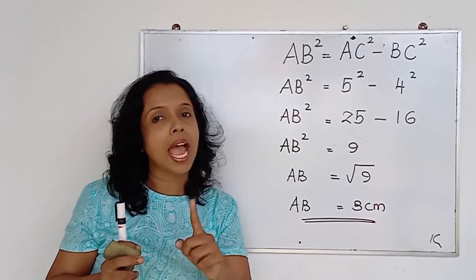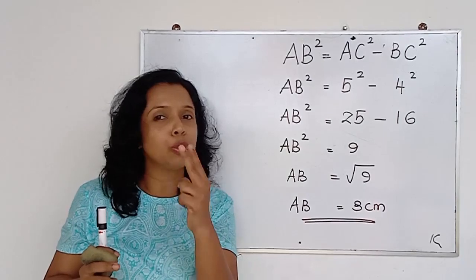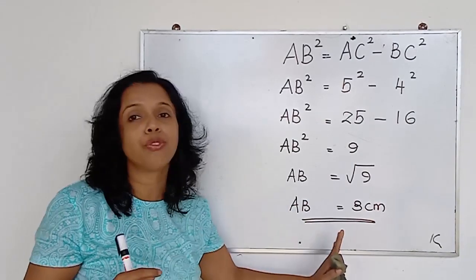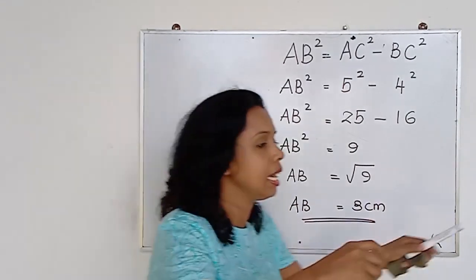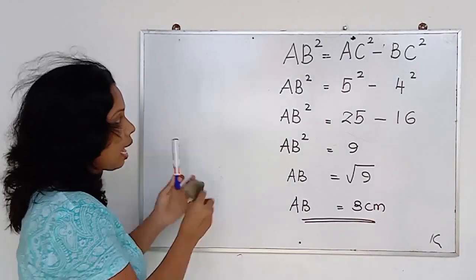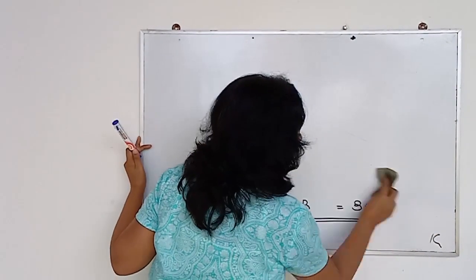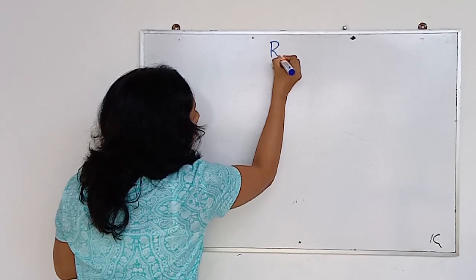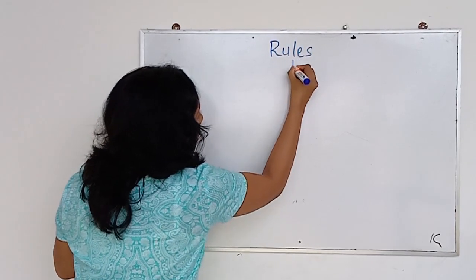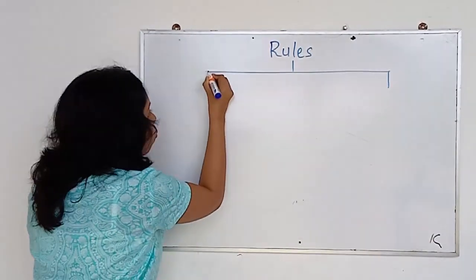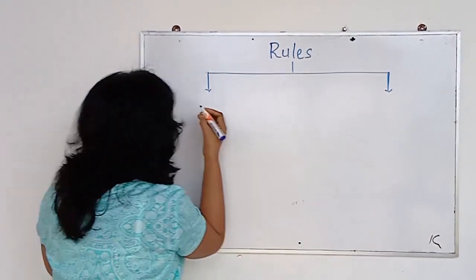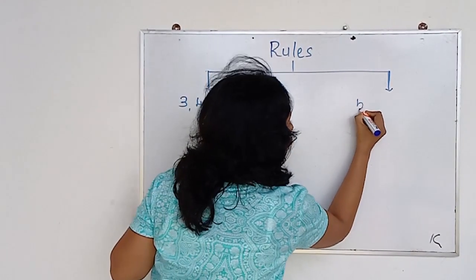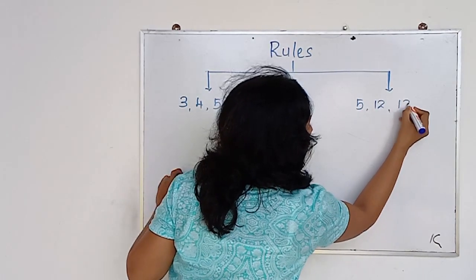Now I will give you an easy method. I will introduce two rules with regard to this Pythagorean relation to get the missing figure easily. We name them as two rules: one is the 3-4-5 rule, and the other is the 5-12-13 rule.